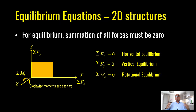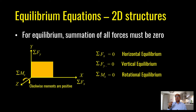In order to solve any structure, we will apply three equilibrium equations. If you know these three equations, you can pretty much analyze and design any structural system. The summation of horizontal forces equal to zero, summation of vertical forces equal to zero, and summation of moments equal to zero — these are the three equilibrium equations for analyzing a structure in two dimensions. In case of three dimensions, you will have six equilibrium equations.